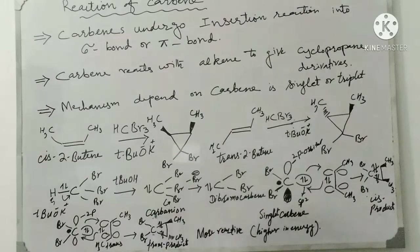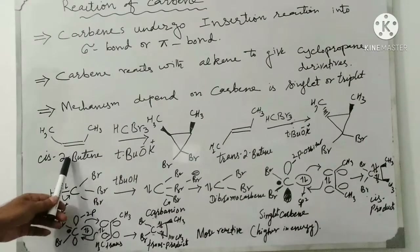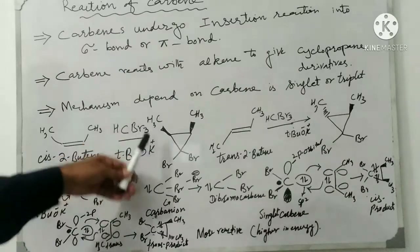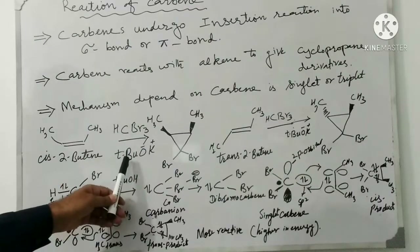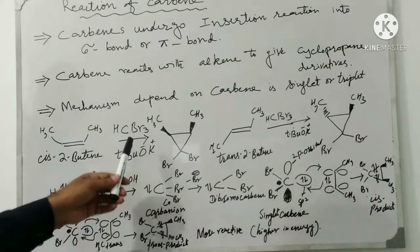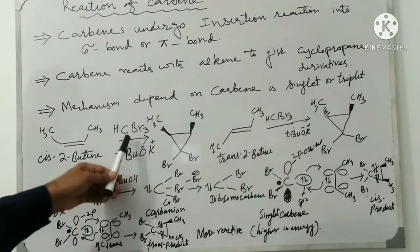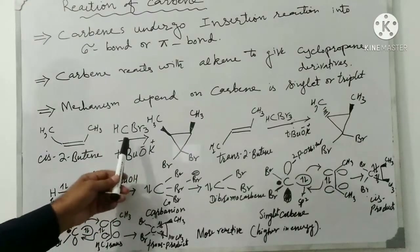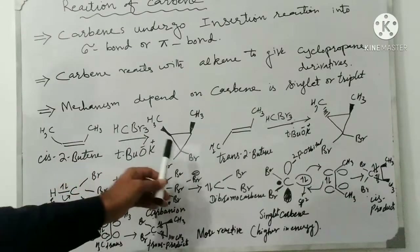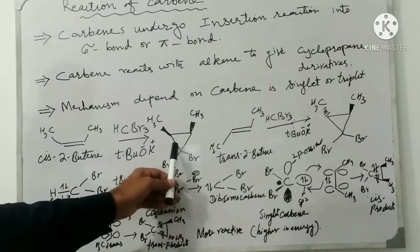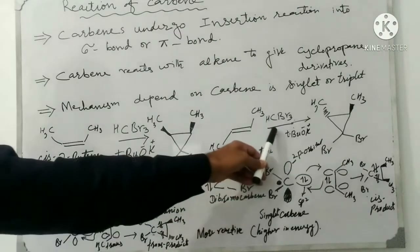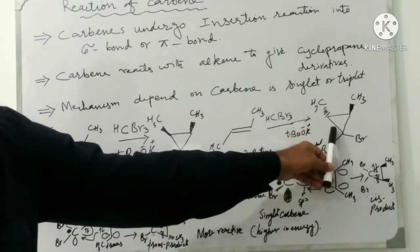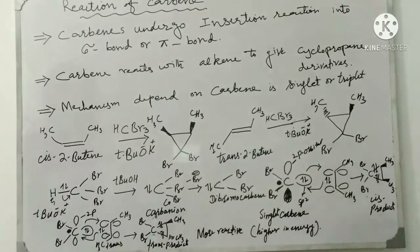Here in an example, cis-2-butene reacts under this condition where we form dibromocarbene. This is bromoform in the presence of a base, potassium tertiary butoxide, which gives us dibromocarbene, which is a singlet carbene. This cis-2-butene gives a cyclopropane derivative which is cis, and trans-2-butene under the same condition gives a trans-cyclopropane derivative.